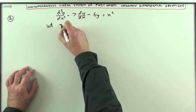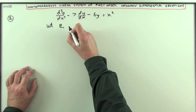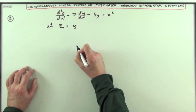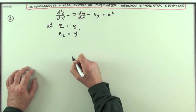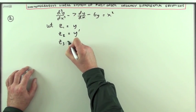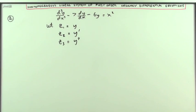First of all, let z, being a function of x, equal y. Let z2 be the first derivative of y, and z3 be the second derivative of y.